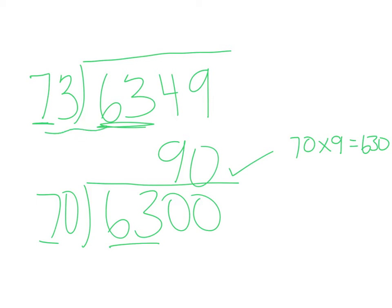That tells us that if we go back to the original problem, we're going to have a quotient close to 90 — that's where the estimation piece comes in. The language you'll see on a test might say 'use compatible numbers to divide.' That's the key vocabulary. You really have to know your facts when using compatible numbers and look for things that make your life easier. The bottom problem was pretty simple; the original top problem would have taken much longer.